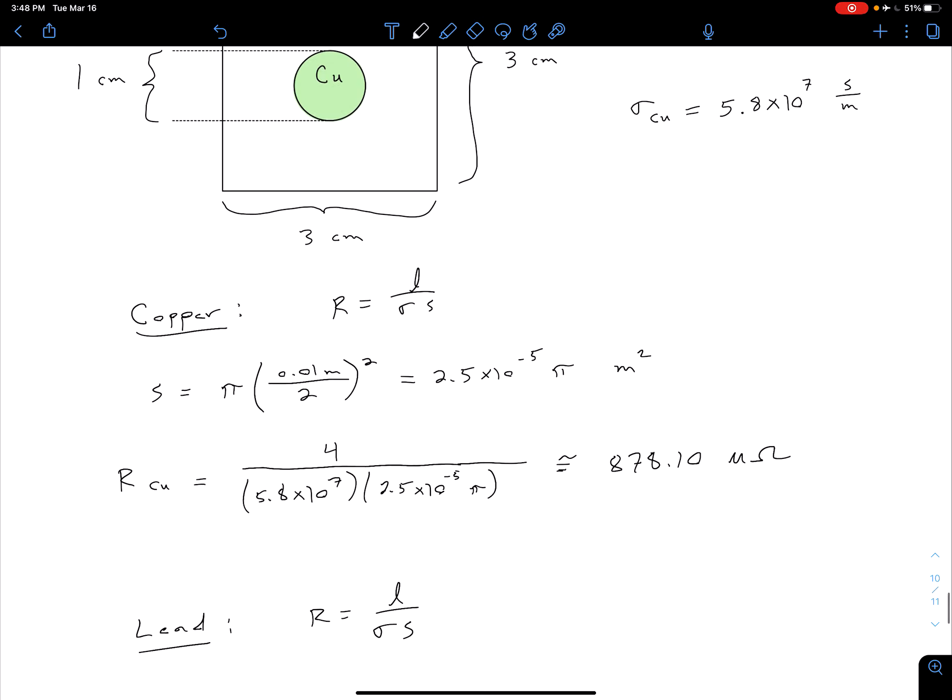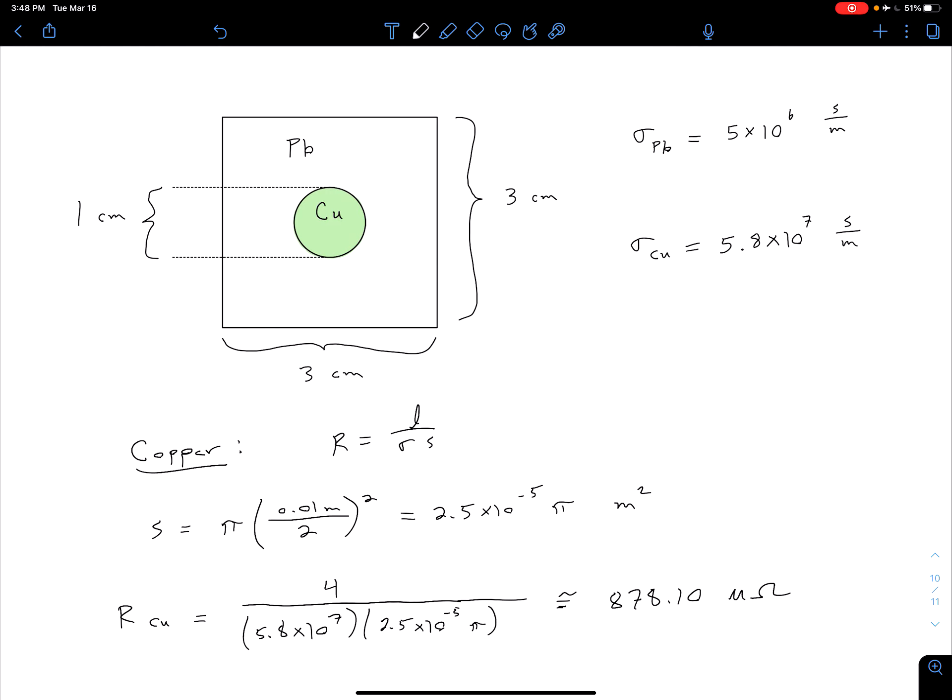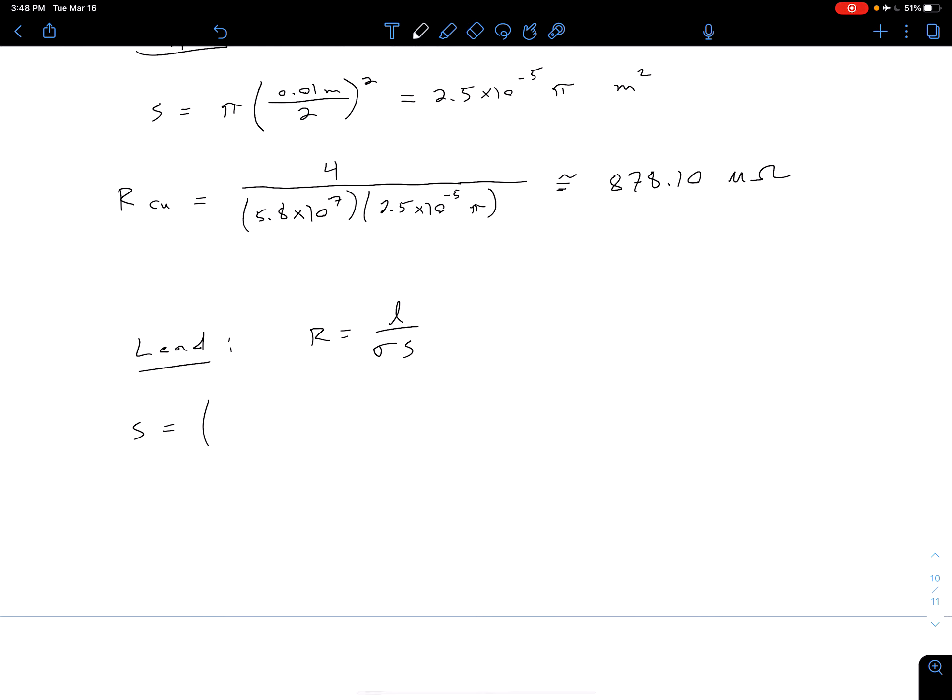For now, we have this uniform cross-section, so we need to figure out what our S is. Our S for the lead is going to be this 3 by 3 square, but then we have to subtract that circle area in the middle. For our square, we want this in meters, so we have 0.03 meters times 0.03 meters. This area is going to be our square. But then we need to subtract the circle, and we found above our circle area is 2.5 times 10 to the minus 5th times pi meters squared.